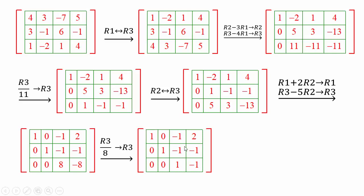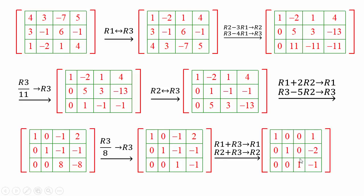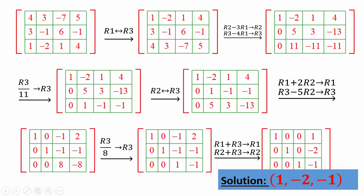Now we have the ones in place — reduced row echelon form — so we can see that z equals negative 1. You can either use substitution to find y and x, or do one more step: create zeros above the 1 in the z column. Add row 3 to row 1 to get the new row 1; add row 3 to row 2 to get the new row 2. Now you can read off the solution: x equals 1, y equals negative 2, and z equals negative 1. You can use this process to solve systems of 3 by 3, 4 by 4, 5 by 5 — it doesn't matter. Pay attention: if any row becomes all zeros, there are infinitely many solutions; if any row gives 0 equals a nonzero number, there is no solution.